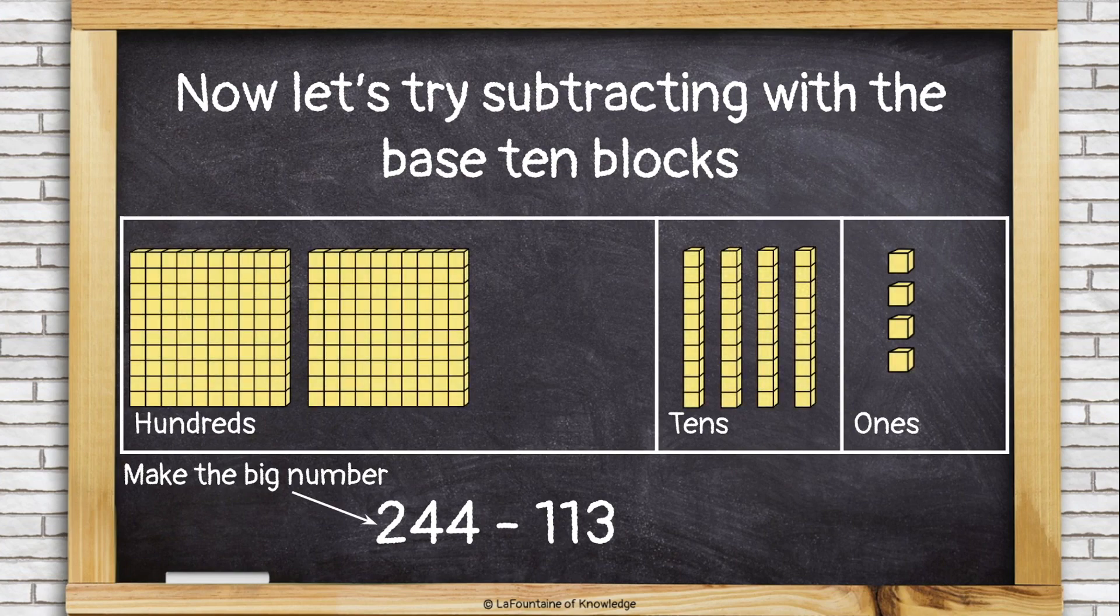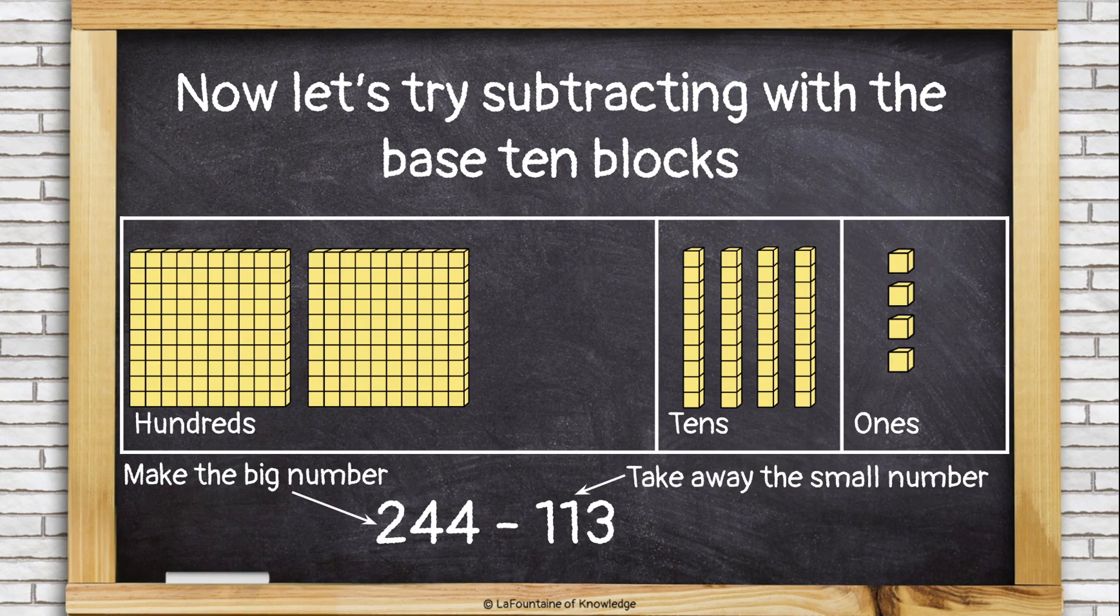And because I'm subtracting, I'm going to take away the smaller number, starting with the ones. So I need to take away 3 ones. Okay, they're gone. Now I need to take away 1 ten. Gone. And I need to take away 100. Gone.